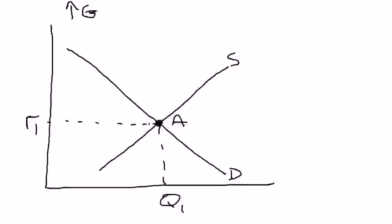The supply curve was driven by national savings. Anything that increased national savings shifted the supply of loanable funds to the right, and anything which decreased national savings shifted the supply of loanable funds to the left.